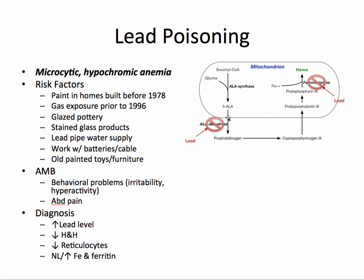Lead poisoning interferes with enzymes in the mitochondria associated with the synthesis of heme, resulting in a microcytic hypochromic anemia. Risk factors include paint in homes built before 1978, gas exposure prior to 1996, glazed pottery, stained glass products, having a lead pipe water supply, work with batteries or cable, and old painted toys or furniture.